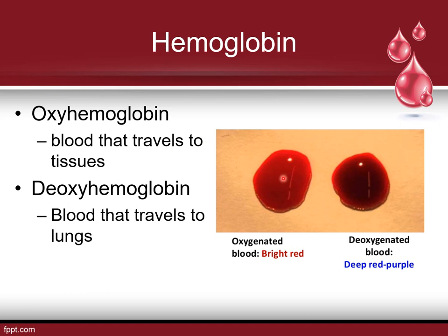Oxygenated blood is bright red, while deoxygenated blood is deep red or purple. If you get cuts in different parts of your body, you might see a brighter red or deep red-purple color, which would tell you whether the blood is oxygenated or deoxygenated.